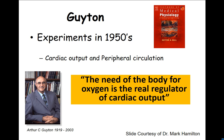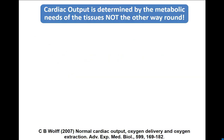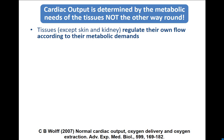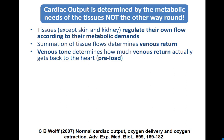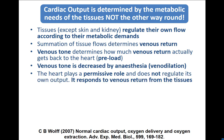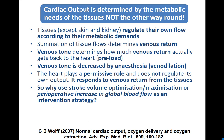Going back to this slide, courtesy of Mark Hamilton, he highlights Arthur Guyton, great medical physiologist. The need of the body for oxygen is the real regulator of cardiac output. Chris Wolfe summarised it: cardiac output is determined by the metabolic needs of the tissues, not the other way around. Tissues regulate their own blood supply; summation of tissue flows determines venous return. But if you suddenly decrease venous tone and venodilate, for the same fluid in the body you will reduce preload. The heart plays a permissive role, responding to venous return. So the concept of stroke volume optimisation just doesn't make physiological sense.